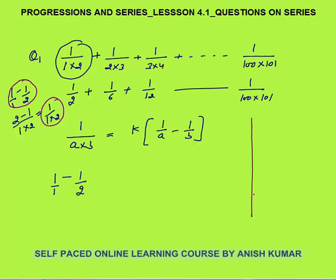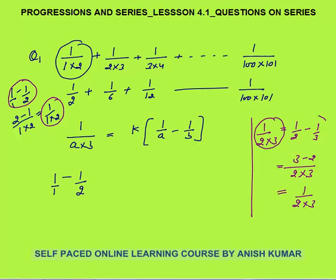Same way, 1/(2×3) can be written as 1/2 − 1/3, because taking LCM as 2×3 gives (3−2)/(2×3) = 1/(2×3). Similarly, 1/(3×4) = 1/3 − 1/4, and so on.